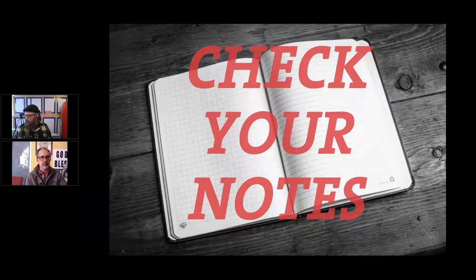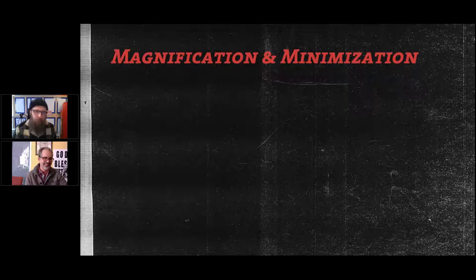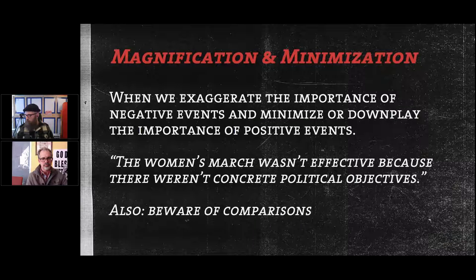A lot of this has parallels with Buddhism — it's just written in psychological language instead. The next distortion is magnification and minimization: exaggerating the importance of negative events and minimizing or downplaying the importance of positive events. A recent example: 'The Women's March wasn't effective because there weren't concrete political objectives.' It was the largest public protest ever in the history of the world, and it came the day after the inauguration.